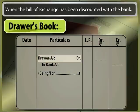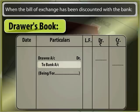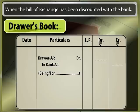In the drawer's book, when the bill of exchange has been discounted with the bank: Drawee account is debited with the full value of the bill and noting charges, to bank account with the full value of bill and noting charges. In the above case, no separate entry will be passed for noting charges.